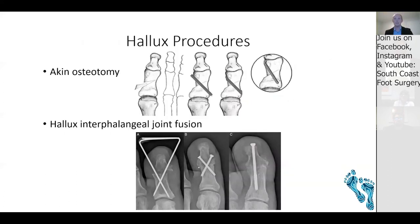For hallux procedures, while purely hallux deformity is less common, an Akin osteotomy — taking a bone wedge and closing it with a screw or staple — is commonly performed alongside proximal or distal metatarsal procedures. Interphalangeal joint fusions are also available for those with significant joint destruction, with several different fixation options.